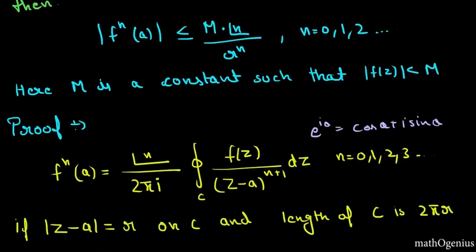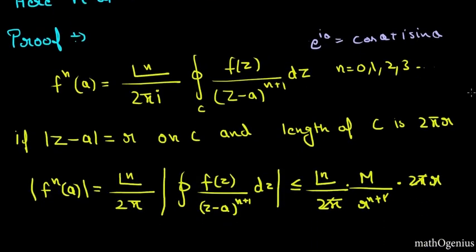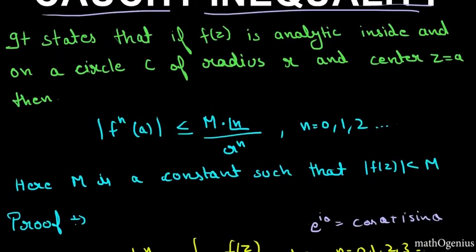Now let's take a look at the proof. Proof is really simple. Just take the Cauchy integral formula, take the modulus of this and put mod of z minus a equal to r. Why r? Because in the statement f(z) is analytic inside and on a circle C of radius r.